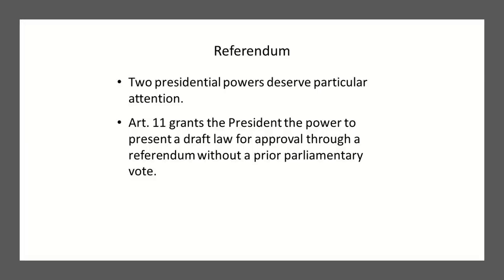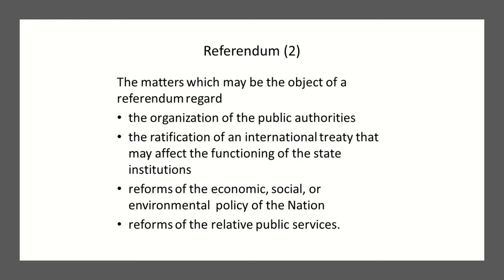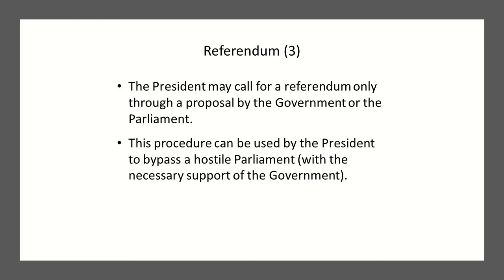The French government also allows for the possibility of a referendum. Article II of the French Constitution grants the president the power to present a draft law for approval through referendum without a prior parliamentary vote — so the people can approve a law proposed by the president directly without parliament in the process. Matters that may be the object of a referendum include organization of public authorities, ratification of international treaties affecting state institutions, and any reforms of economic, social, or environmental policy. The president may call for a referendum only through a proposal by the government or parliament, and can use this procedure to bypass a hostile parliament.